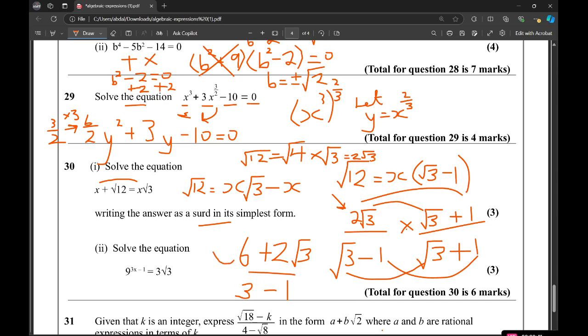So, this is going to simplify to 6 plus 2 root 3 over 2. Divide everything by 2. We're going to have 3 plus root 3. And that is a fully simplified answer. So x equals 3 plus root 3. That's that one done.